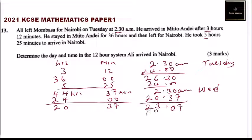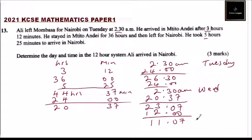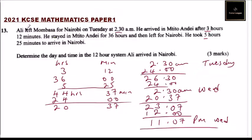In terms of the 12-hour system, we subtract 12 from the hours: 3 - 12 doesn't apply here, so working through the conversion we get 11:07. So he arrived in Nairobi at 11:07 p.m. on Wednesday.